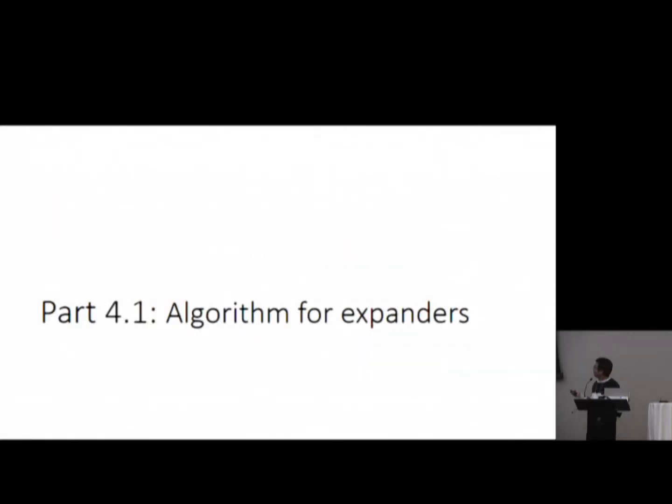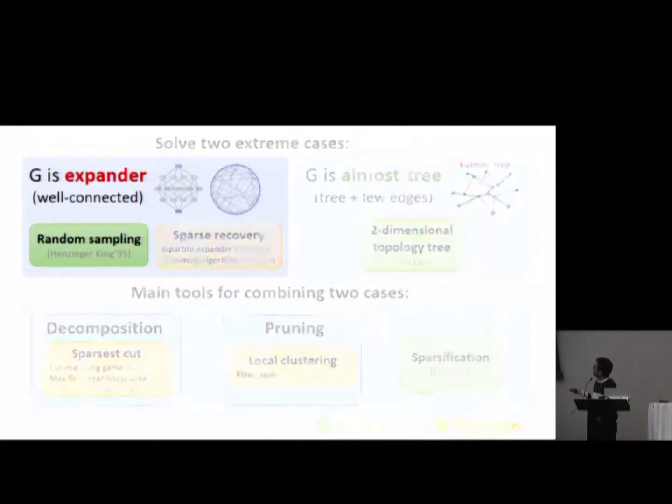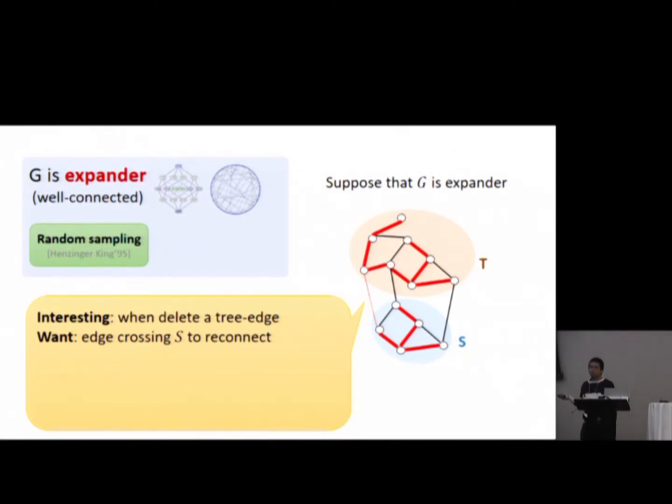Now let's see the first box. How do we do this? We have a graph which is an expander and we have a spanning tree. The only interesting case I want to say is when you delete some tree edge. For example, you delete this edge which was in the tree before. Once you delete this, the tree breaks apart into two parts, s and t. And what we want is to find any edge across s. If you can find it, then you can reconnect the two parts together and then you get a new spanning tree.